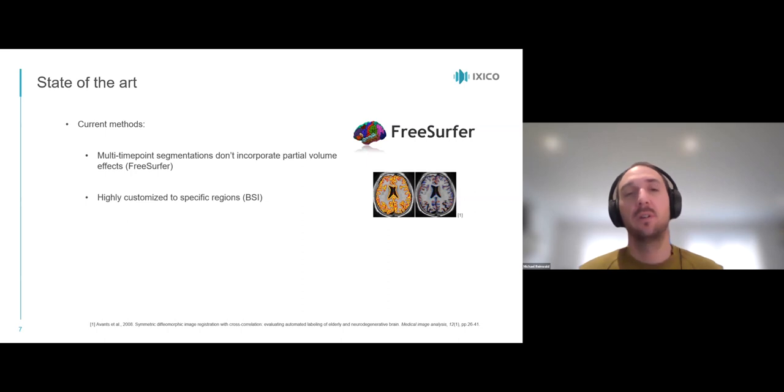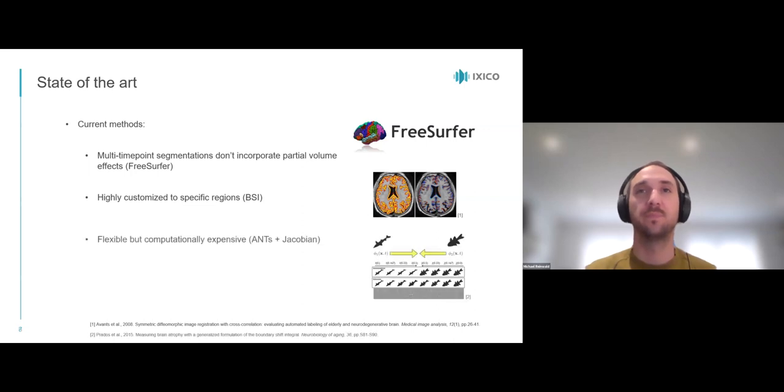The boundary shift integral, or BSI method, is highly customized for certain regions that have clear boundaries in the image. And methods using non-linear registration and Jacobian integration are flexible but sometimes computationally intensive and slow, for example with the unbalanced normalization tools, or ARNs, which minimizes the difference between two images by subject-specific optimization.